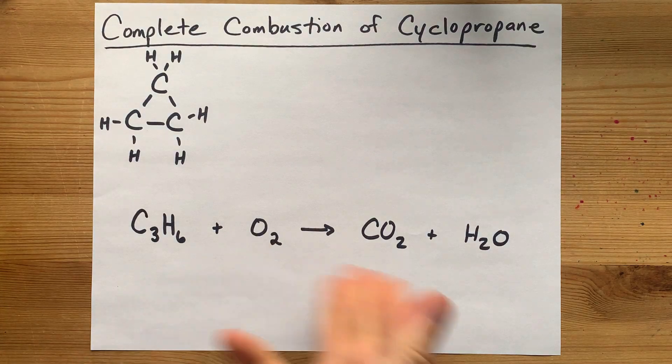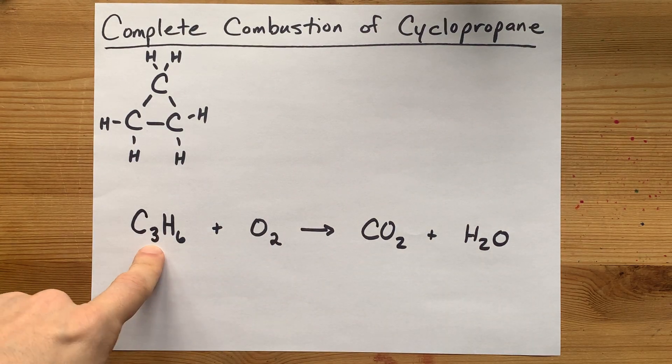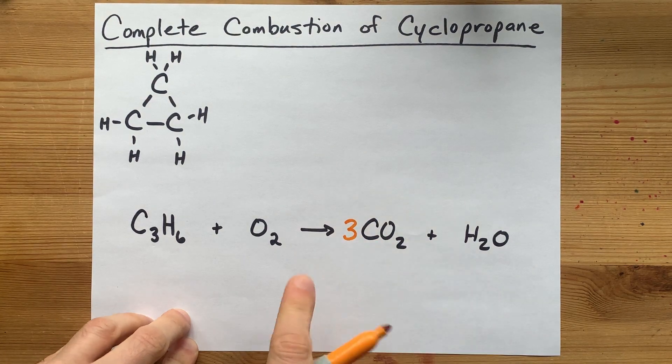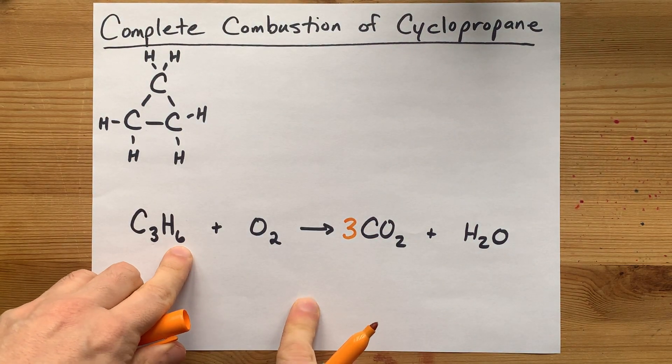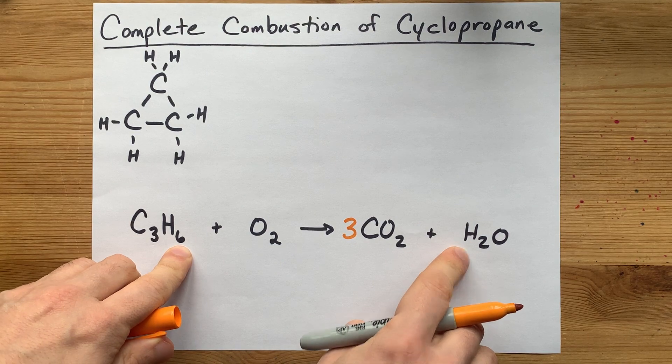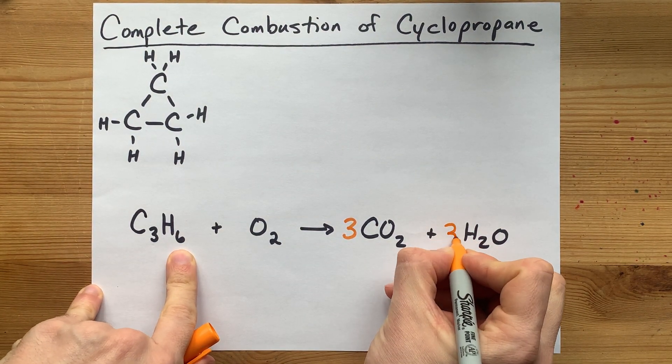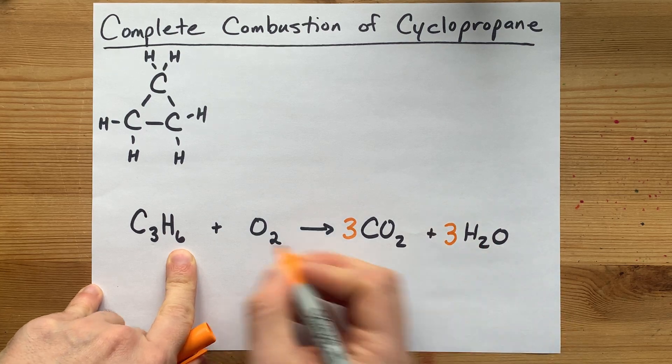Your job now is to simply balance this. Three carbons on this side, I need three carbons on this side. Great. Six hydrogens on this side, I need six hydrogens on this side. But they come in packs of two, so I only need three of those packs. Three times two is six.